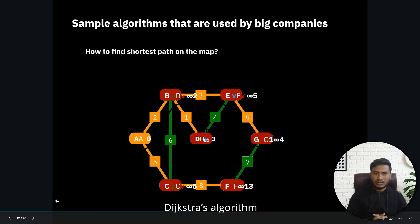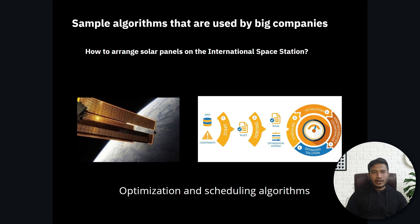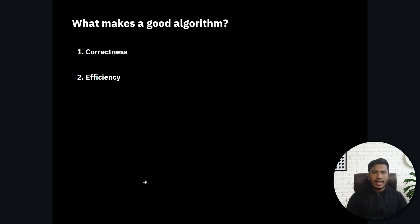Dijkstra's algorithm is used across all major mapping services. Even NASA uses algorithms — at the International Space Station, they use solar panels, and to arrange those panels efficiently, they apply an optimization and scheduling algorithm. So algorithms are critical even in space exploration.